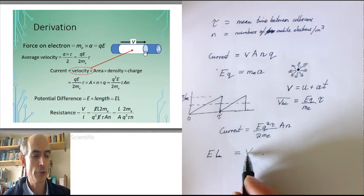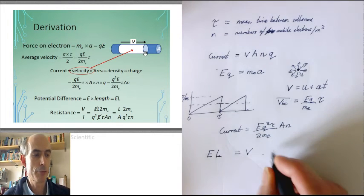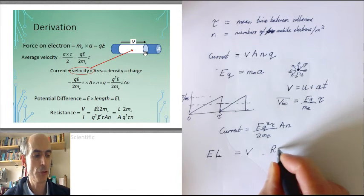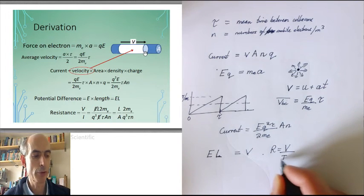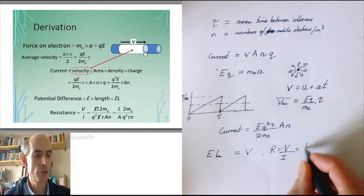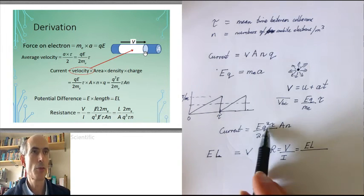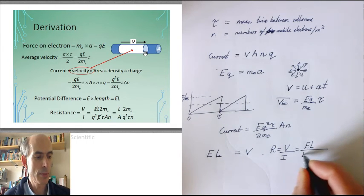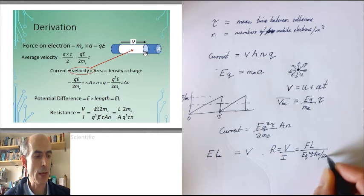So I've now got an expression for the voltage and the current. I can therefore work out an expression for the resistance. It's just the voltage across my conductor divided by the current flowing through my conductor, which is E times l divided by this lot, Eq squared τ An over 2m_e.